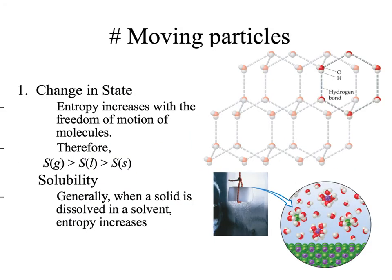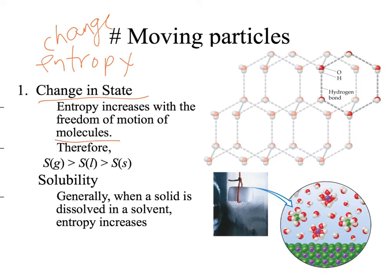Now let's use microstates to think about how entropy will change — specifically, change in entropy when we have a change in state. Entropy increases with freedom of motion of the molecules. So a gas is going to have more ability for molecules to move around than a liquid. The gas would have higher entropy — our symbol for entropy is S — so entropy would be greater in a gas than in a liquid. And in a liquid, molecules can move around more than in a solid, so a liquid would have greater entropy than a solid.